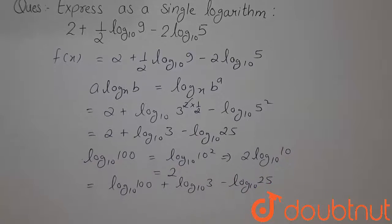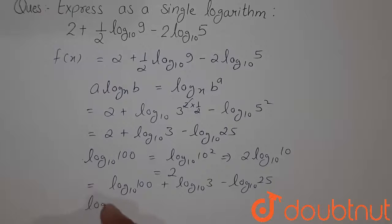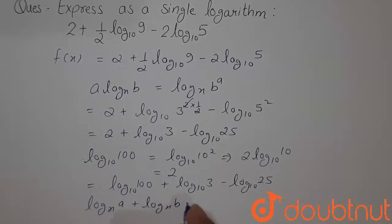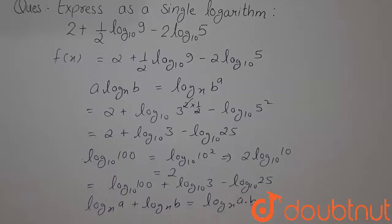Now we use a property here that is log to the base x, a plus log to the base x, b can be written as log to the base x, a into b.